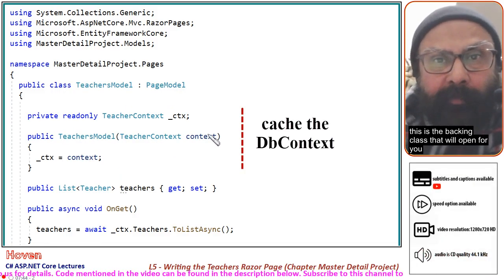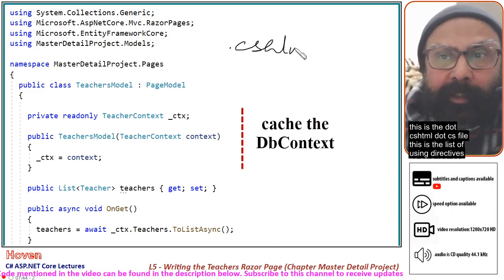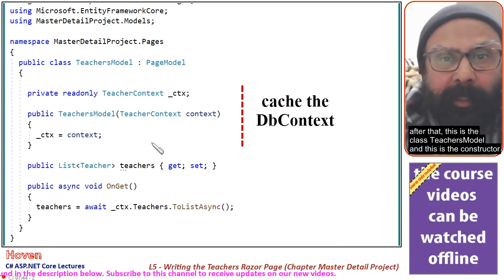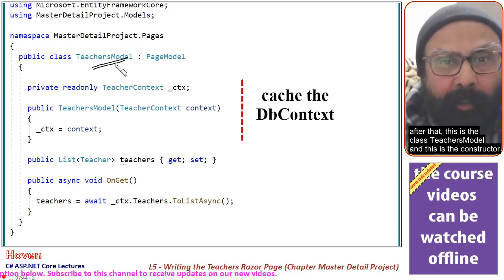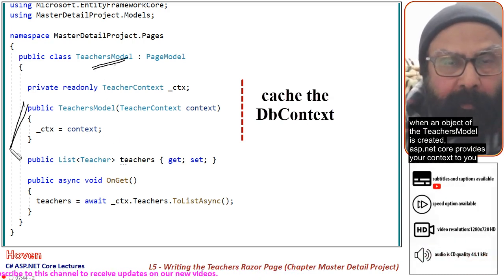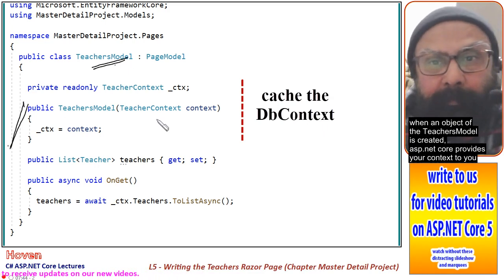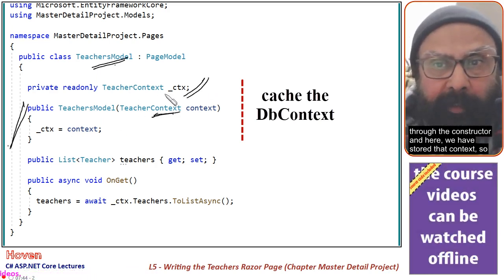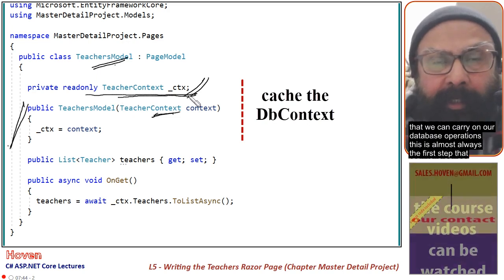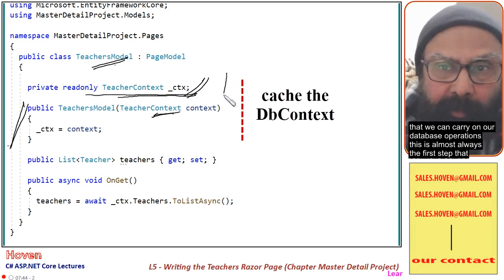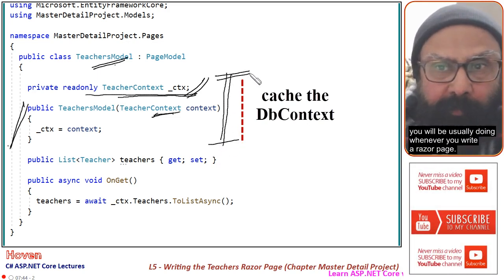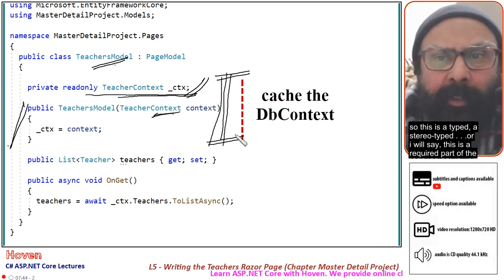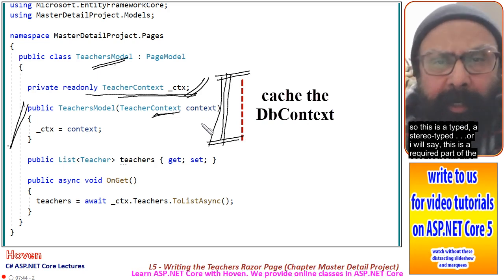This is the backing class that will open for you — the .cshtml.cs file. This is the list of using directives. After that, this is the class TeachersModel, and this is the constructor. When an object of the TeachersModel is created, ASP.NET Core provides your context to you through the constructor. This is a required, stereotyped part of the code.